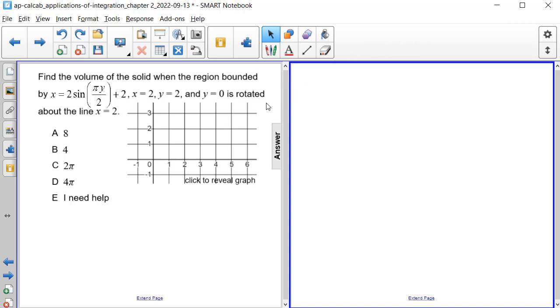Find the volume of the solid when the region bounded by x equals 2 times the sine of the quantity pi times y over 2 plus 2 and the line x equals 2, the line y equals 2, and the line y equals 0 is rotated about the line x equals 2.